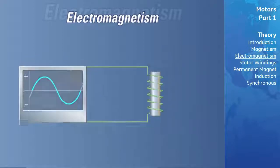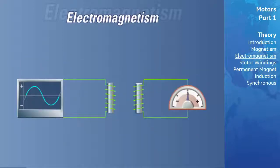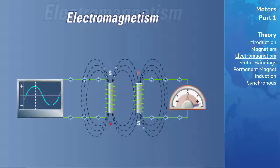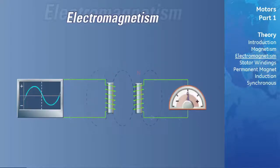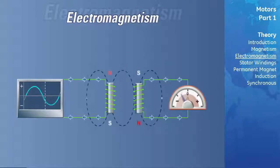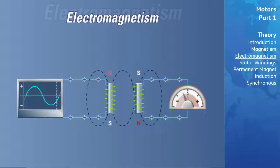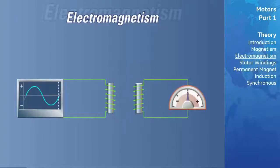If a second electromagnet is brought into close proximity of our AC-excited electromagnet, the cyclic expansion and contraction of the magnetic field of the excited electromagnet will, in effect, be continuously cutting the conductor windings of the second electromagnet, which will induce a voltage, and hence current, in the non-excited coil. This induced current will create a secondary magnetic field, as illustrated.